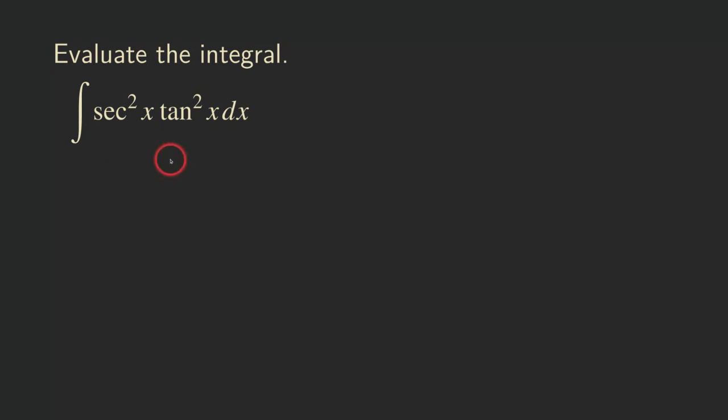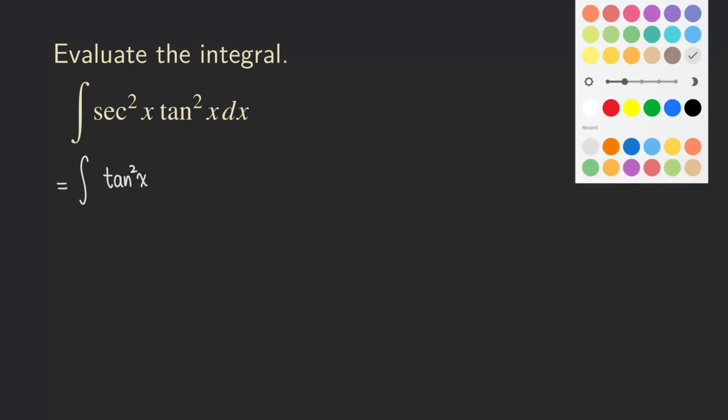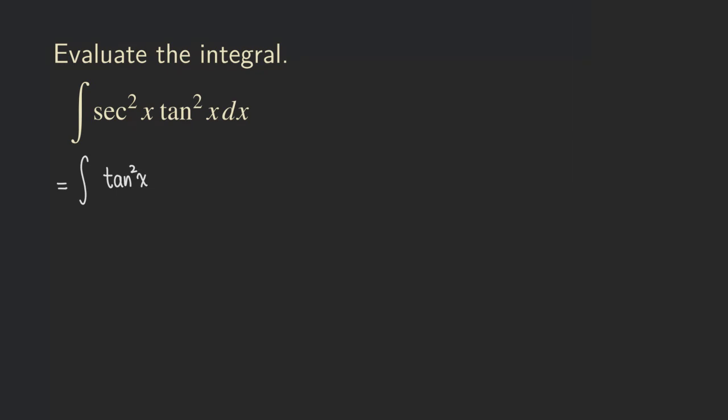First, we are going to start by reserving two copies of the secant. So reserving the whole secant square x right here. So now we are going to write it as tangent square x, and then reserve it so that it will be secant square x dx.